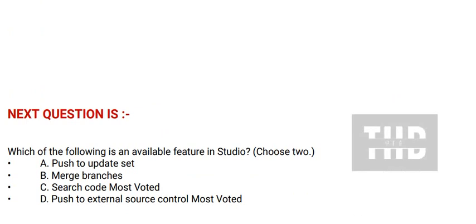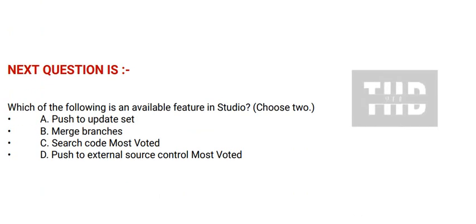Next question: Which of the following is an available feature in Studio? Choose two options. Option A: push to update set. Option B: merge branches. Option C: search code. Option D: push to external source control. The correct answer is Option C.